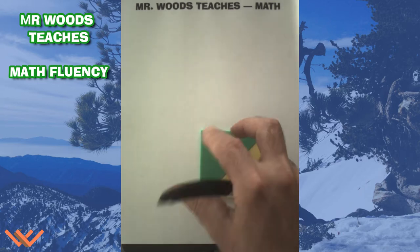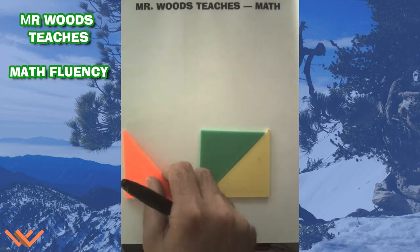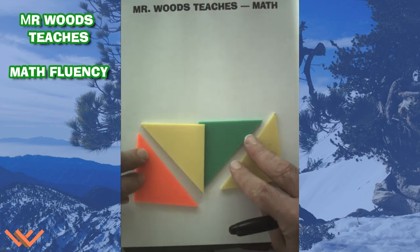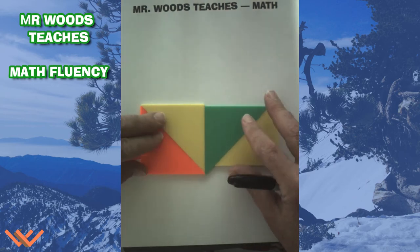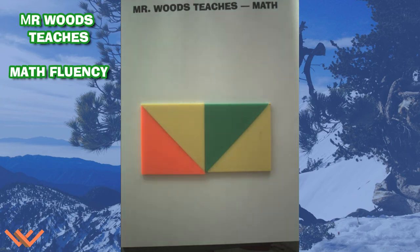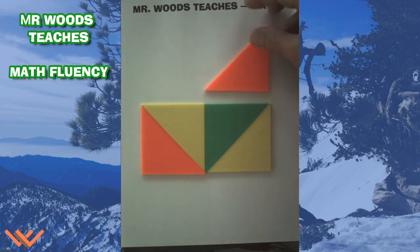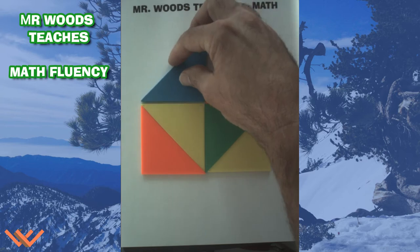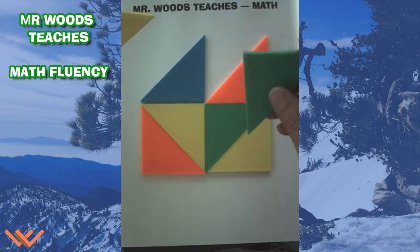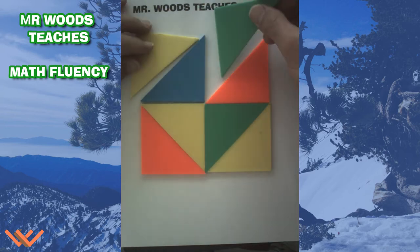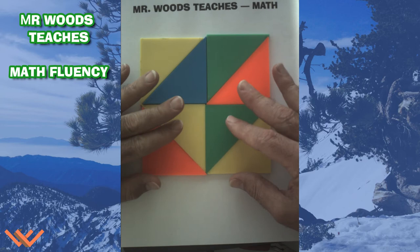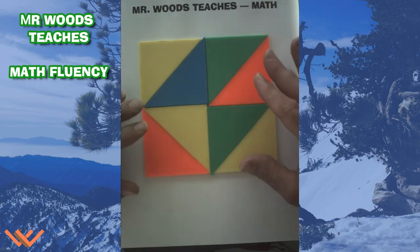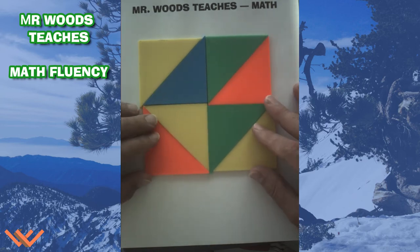We have one, two, three, four, five, six, seven, and eight. Now with these eight pieces put together, what shape does that make? It makes a square.